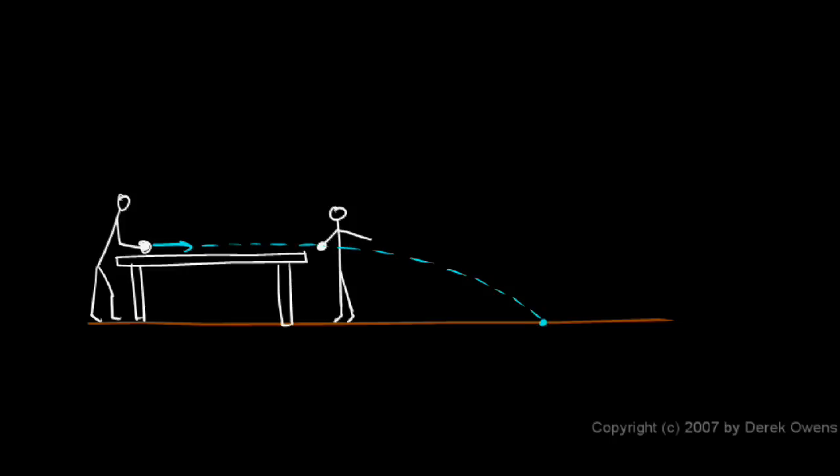You can demonstrate this to yourself without a gun, just at lower speeds, if you have a table and a ball or some object, and you have someone stand over here beside the table. And this person holds an object right there, and then you stand over here, and you're going to give this object a shove. And it's going to go flying to the right, and when it gets to the edge of the table, it's going to start moving in a downward parabolic path like that. If right when it gets to the edge of the table, this other person releases this one and lets it fall straight down.